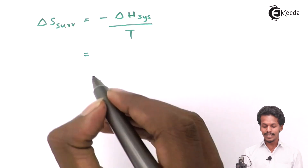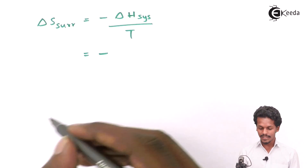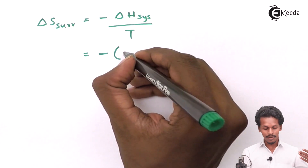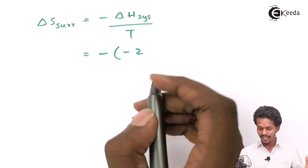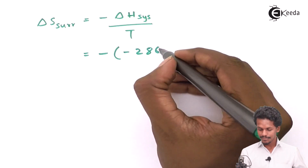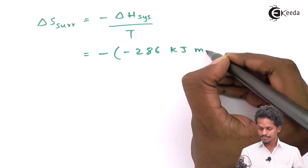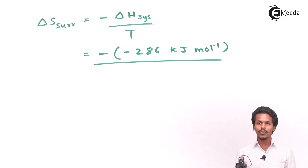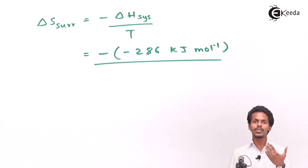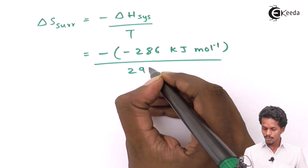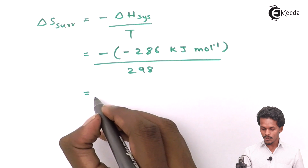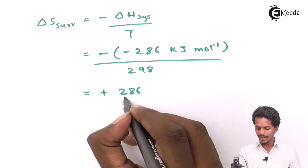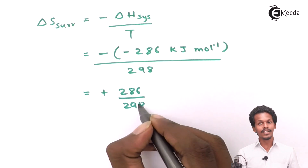So we have: minus of minus 286 kJ per mole divided by 298 Kelvin. The minus times minus gives a positive value, so we calculate 286 divided by 298.